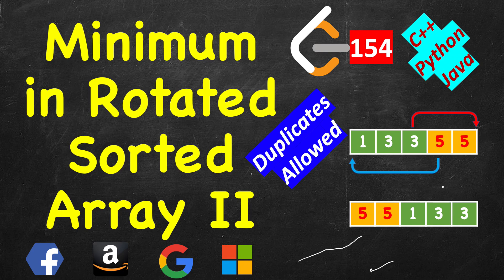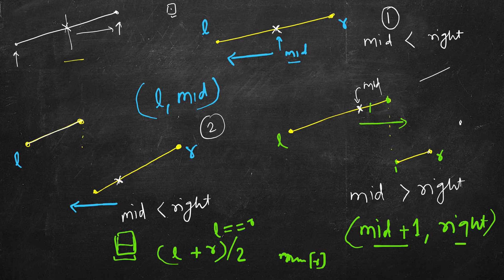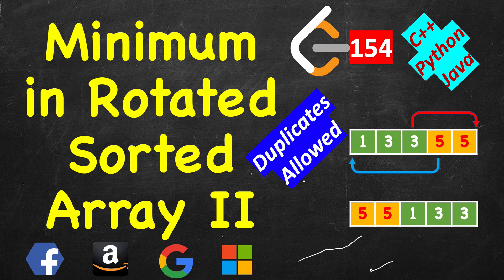Here duplicates are allowed, so you can see numbers like 1, 3, 3, 5, 5 are repeated. The idea is very similar to the previous problem. There we had three cases: either one part is zero (strictly increasing), or there's a dip where the minimum lies, with mid in the larger first or smaller second part. Due to duplicates, there will be a few more scenarios.